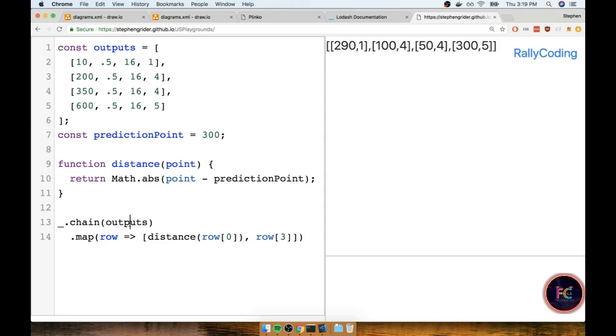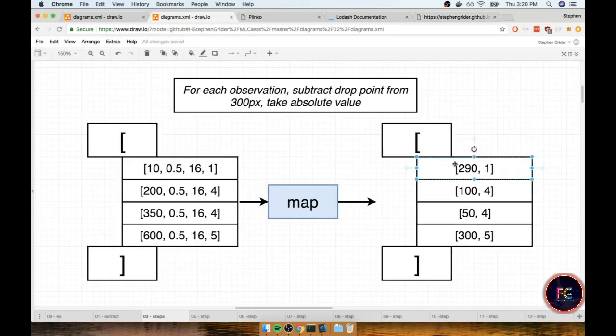I know that this step looks a bit confusing, but if you walk through it step by step, you'll get a good idea of what's going on. All we did was set up our chain, called map on our outputs, and tried to get out the distance for that first element to 300 pixels, and the second element is our bucket number. The output of this step is what you see on the top right hand side. If I look back at my diagram, it looks like what I expected - first element is the distance to 300 pixels, second is the bucket the ball landed in.